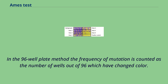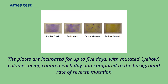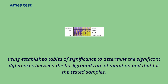In the 96-well plate method, the frequency of mutation is counted as the number of wells out of 96 which have changed color. The plates are incubated for up to 5 days, with mutated colonies being counted each day and compared to the background rate of reverse mutation, using established tables of significance to determine significant differences between the background rate of mutation and that for the tested samples.